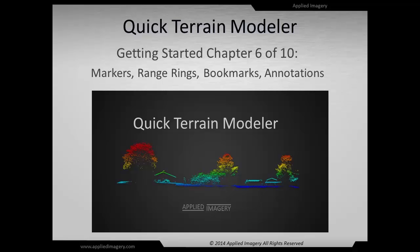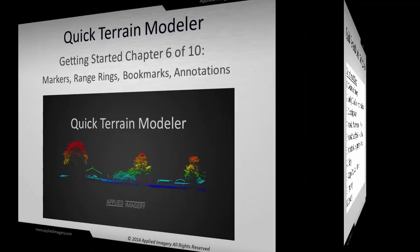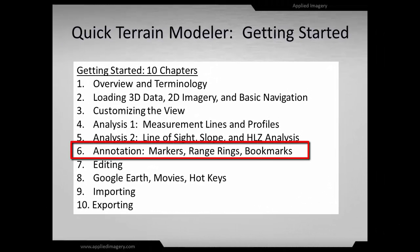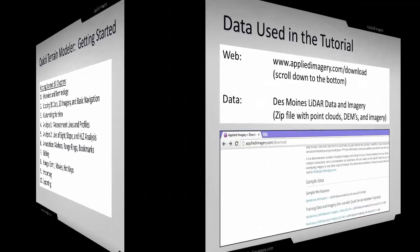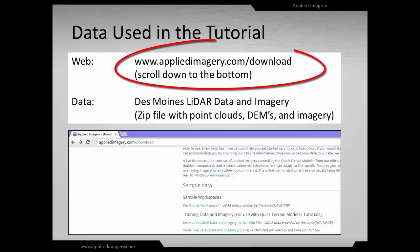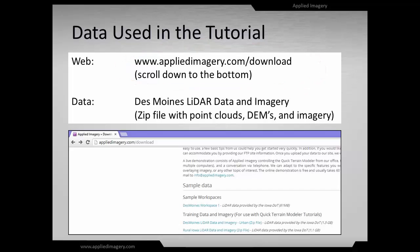Welcome to Chapter 6 of the Quick Terrain Modeler Getting Started tutorial series. In this module, you will learn how to create markers, range rings, and bookmarks. You'll also learn how these tools fit into the general umbrella of annotation. We'll be using the Iowa Rural LiDAR data again in this video, so feel free to visit AppliedImagery.com/download and download the zip file containing the Iowa Rural LiDAR data and imagery.